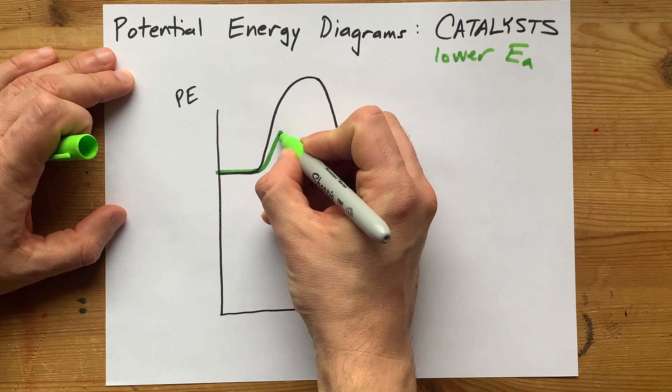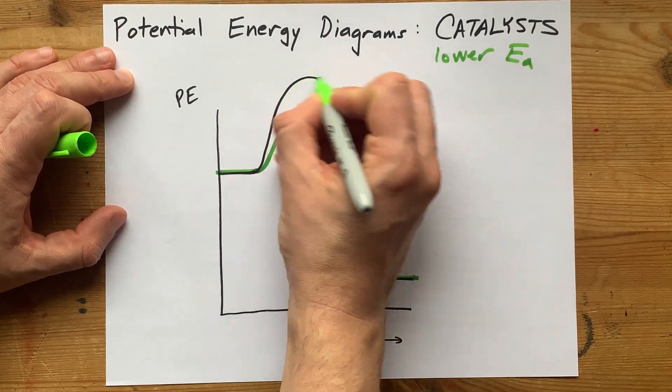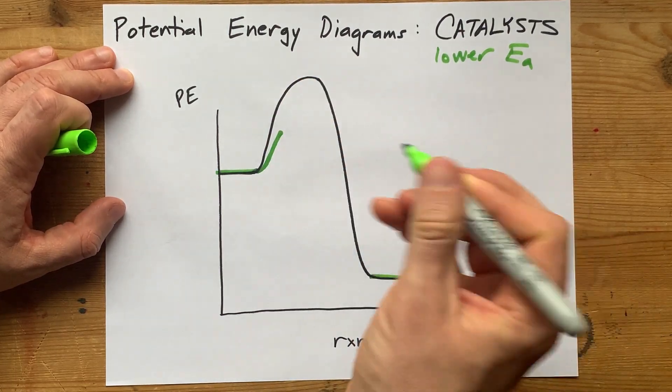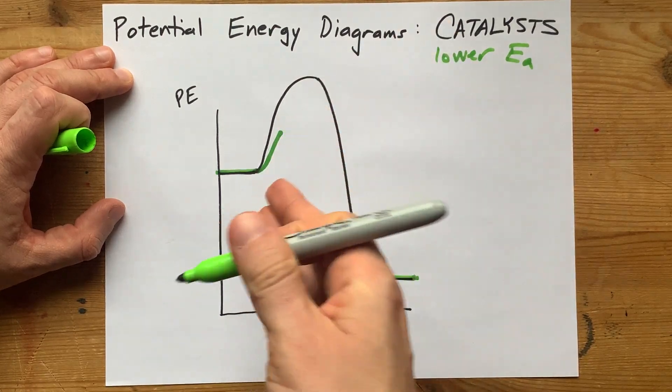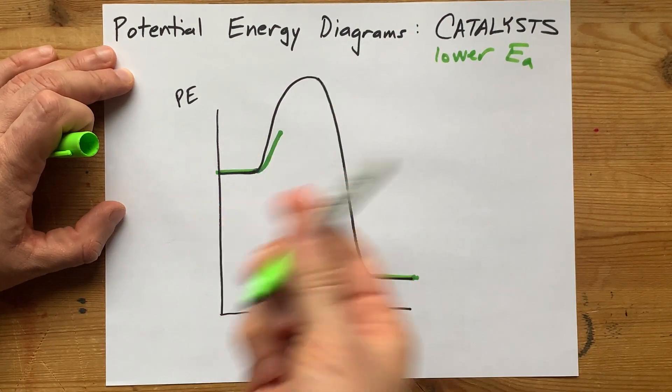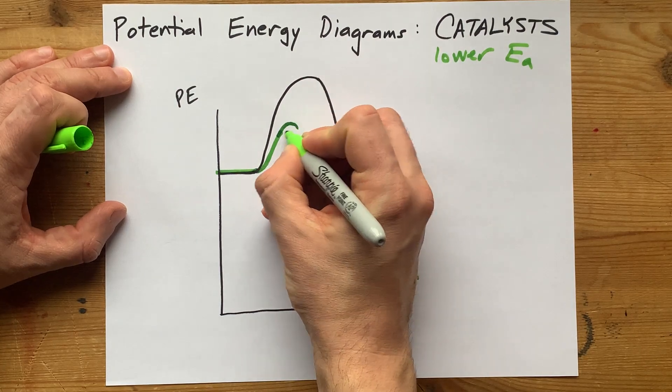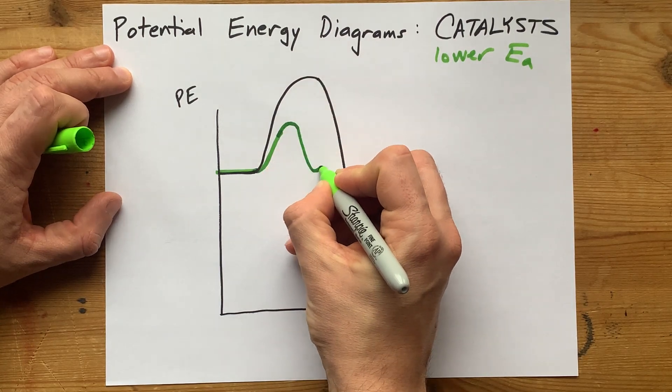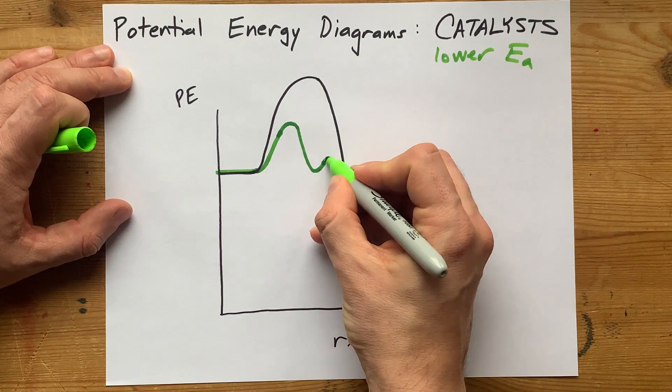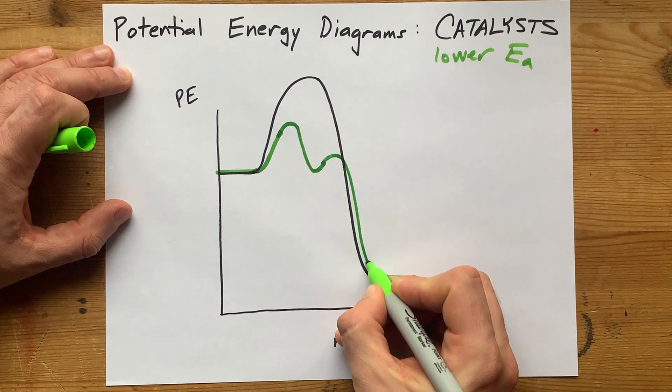But the only rule about the humps is that they can't go any higher than the original one did. If it goes up higher, then you've increased the activation energy, and it's not a catalyst. Just make sure that your hump goes not quite as high. And again, you're allowed, and I encourage you to include two humps for your catalyst potential energy diagram.